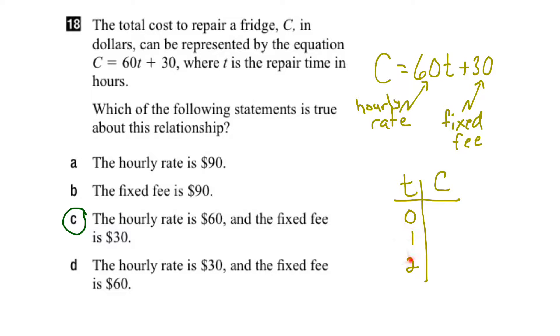So if we substitute these values into our equation we can see that if time is 0, 60 times 0 would be 0 plus 30 would be $30.